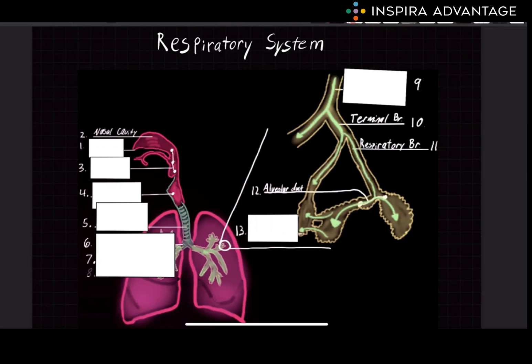The respiratory system consists of several organs and structures, including the nose, pharynx, larynx, trachea, bronchi, and lungs. Let's take a closer look at each of these components, beginning with the nose.